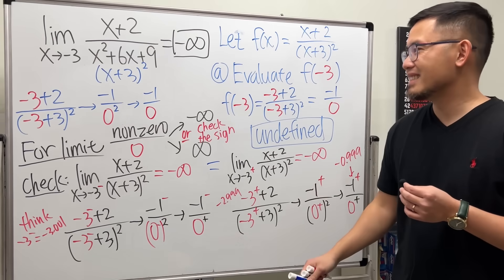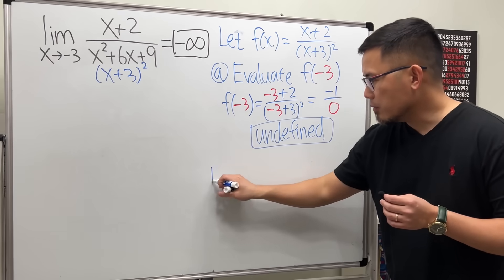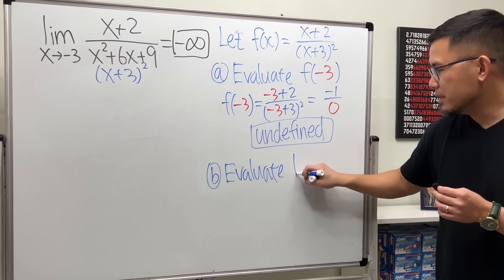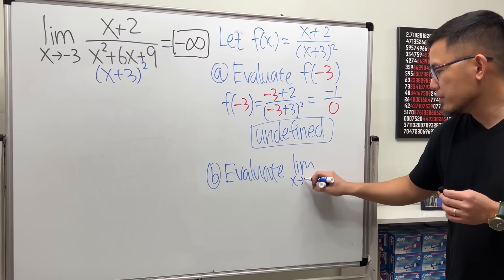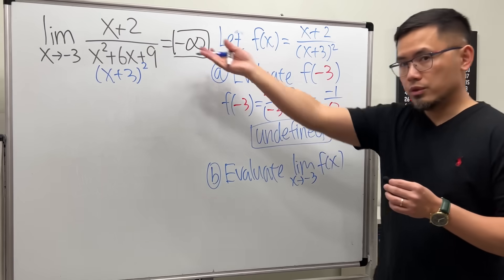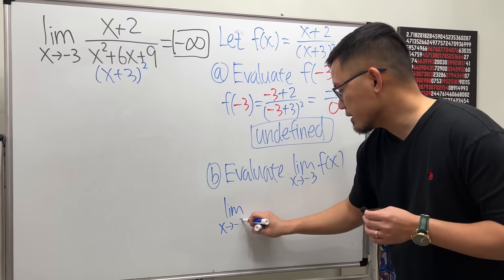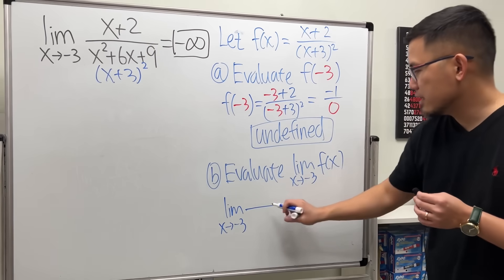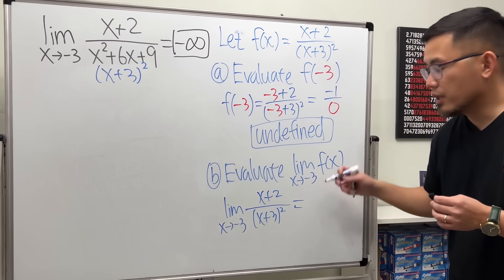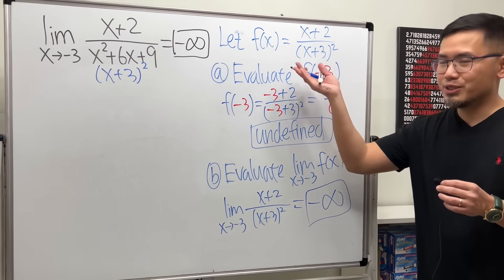So to recap the comparison: for regular computation, f(negative 3) is undefined. But for the limit as x approaching negative 3 of x plus 2 over x plus 3 squared, the answer is negative infinity.